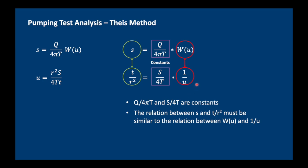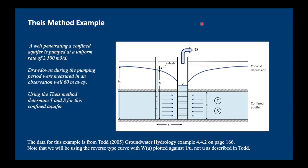As these are constants then the relation between s and t over r squared must be similar to the relation between the well function and 1 over u. This is the fundamental basis of the Theis curve fitting method where we plot s against time and the well function against 1 over u. The best way is to illustrate this using a practical example.